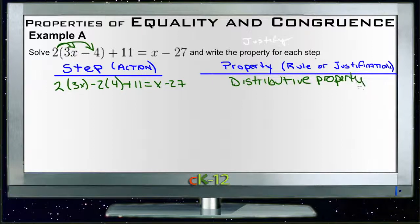Okay, and then our next step would be to combine like terms. So we have 2 times 3x, that's 6x minus 8 plus 11. So negative 8 and positive 11 give us positive 3 equals x minus 27, so that's just combining.